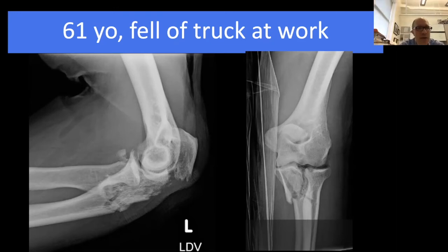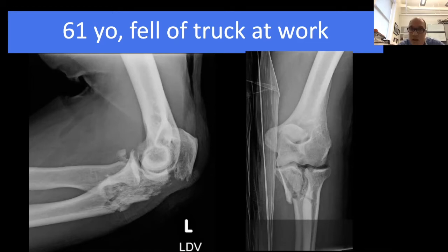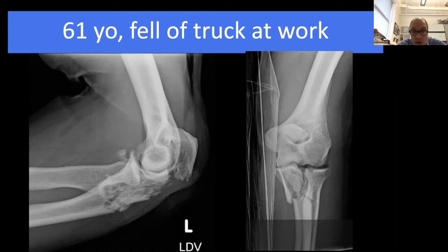An important teaching point: not all olecranon fractures are the same. We now separate typical olecranon fractures from proximal ulna metaphyseal fractures. A typical olecranon fracture is at the mid-joint level and on the AP the fracture lines overlap the elbow joint and distal humerus. When the fracture extends into the proximal ulna metaphysis—even distal to the PRUJ—it should be called an olecranon/proximal ulna fracture and managed differently.